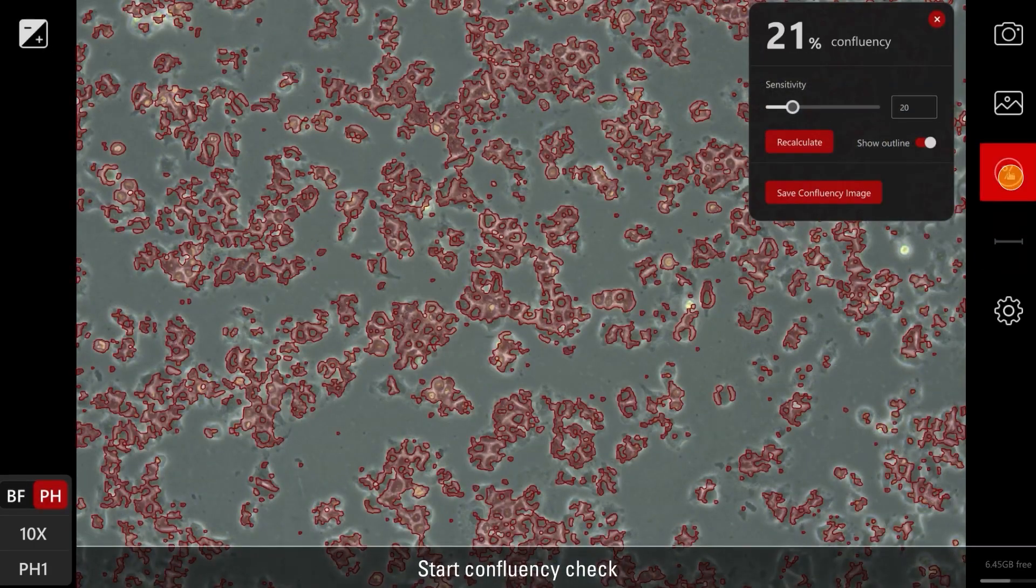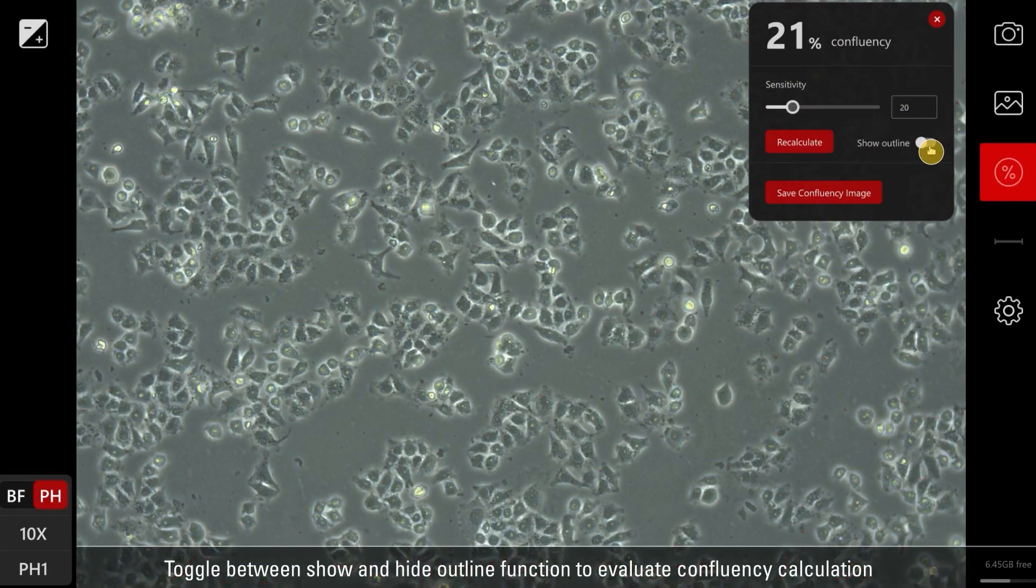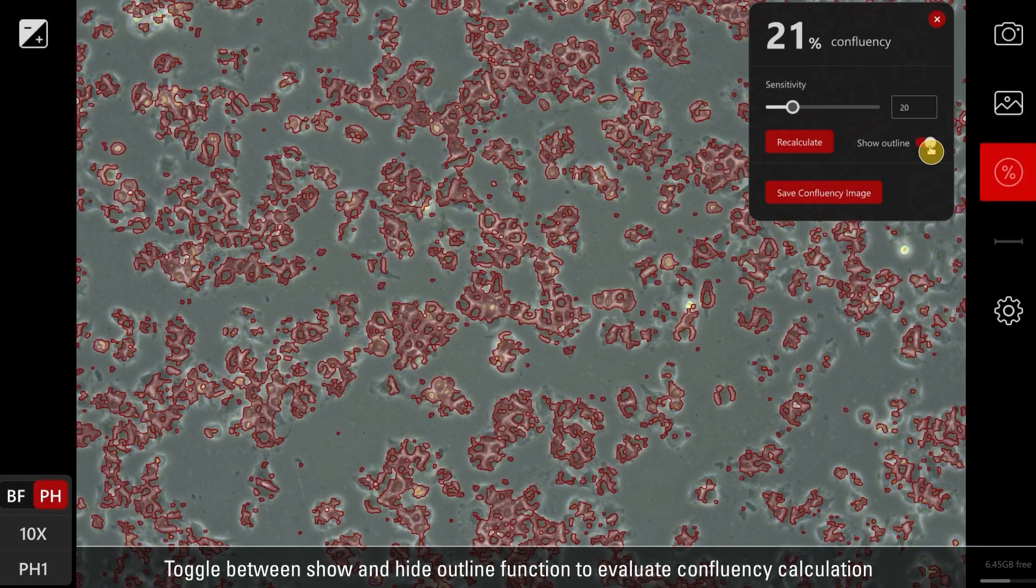Start confluency check. Toggle between Show and Hide Outline function to evaluate confluency calculation.